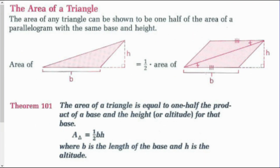Now the area of a triangle. The area of any triangle can be shown to be one-half the area of a parallelogram with the same base and height. So Theorem 101 gives us: the area of a triangle equals one-half the product of a base and the height or altitude for that base, where B is the length of the base and H is the altitude.